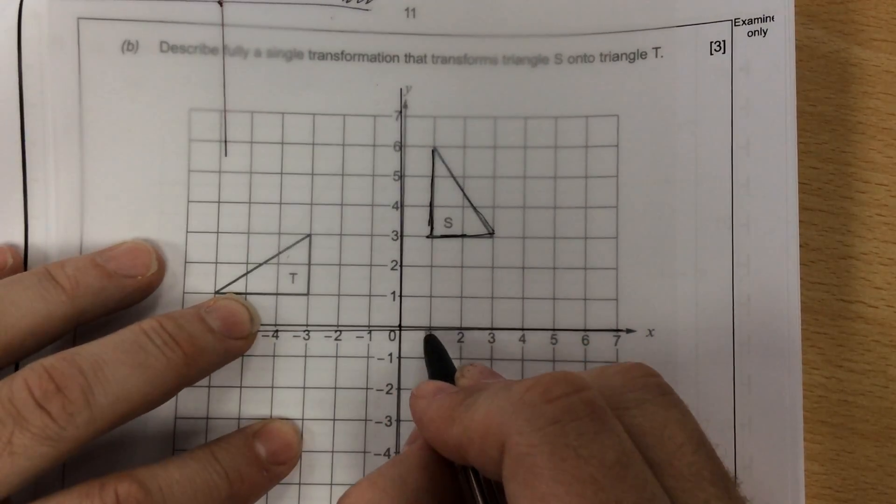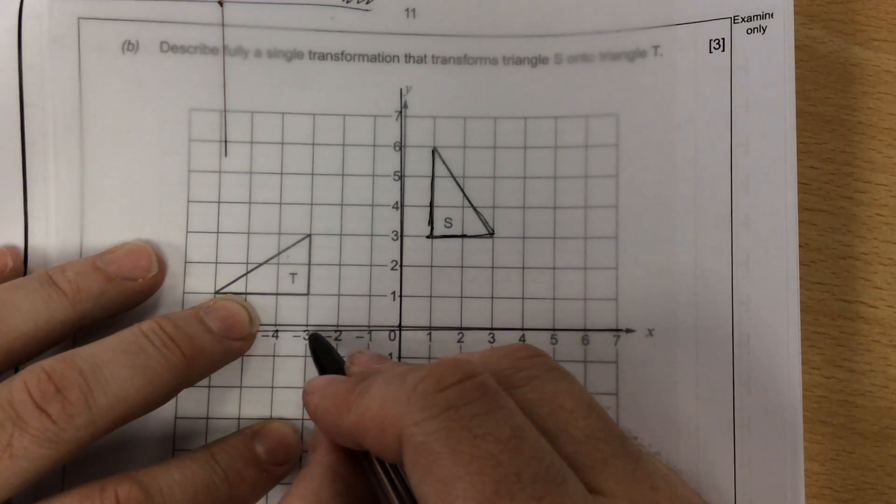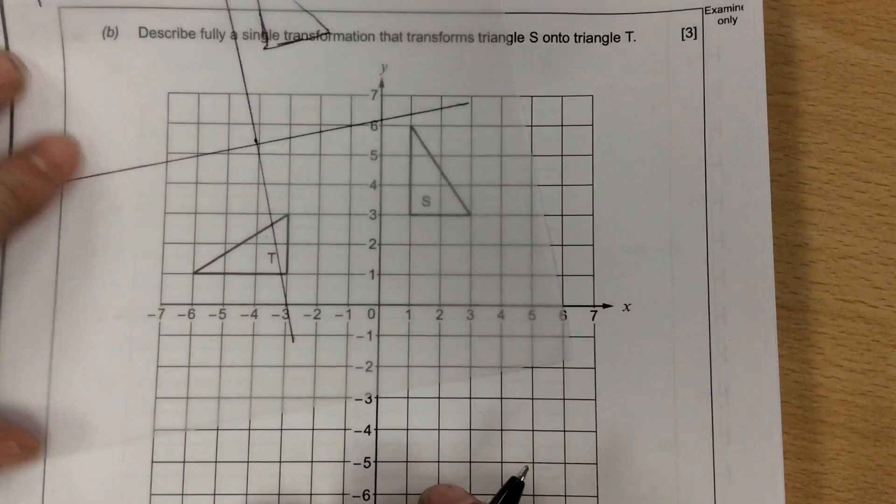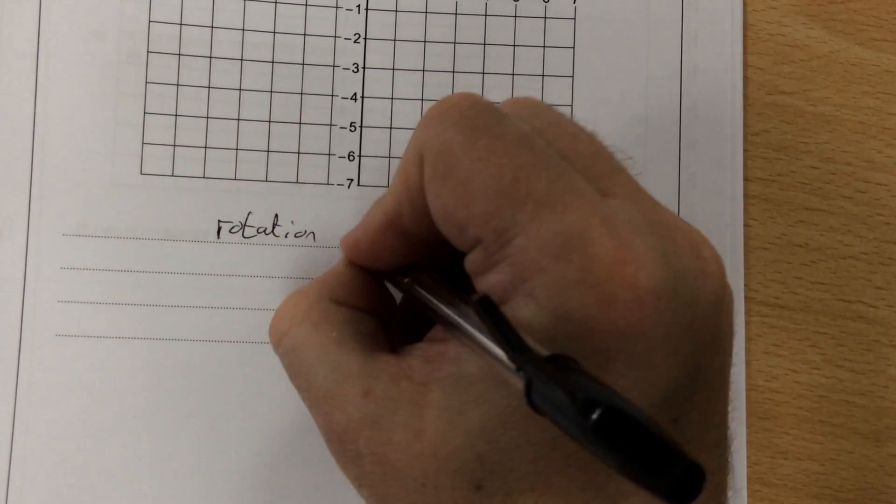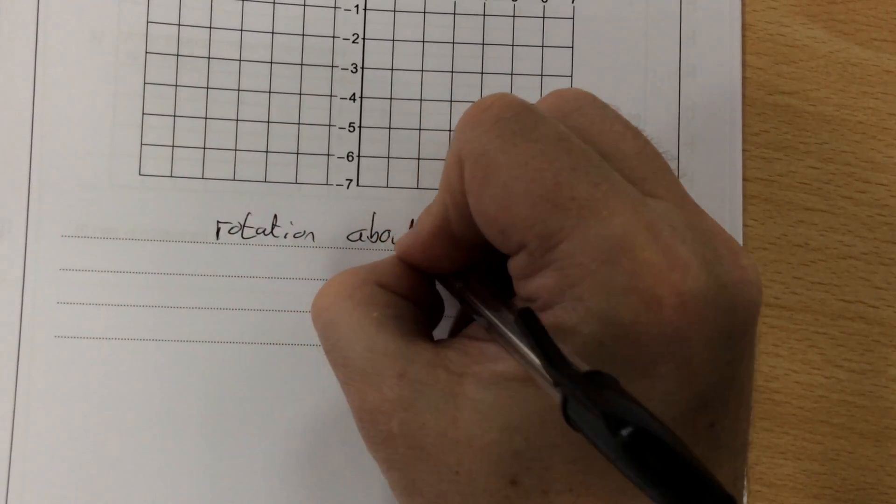Because what's happened is it's gone across 1 up 3, and then it's across 3 up 1, so it's gone the opposite. So what I say here is a rotation about (0,0), or I'll call that the origin,